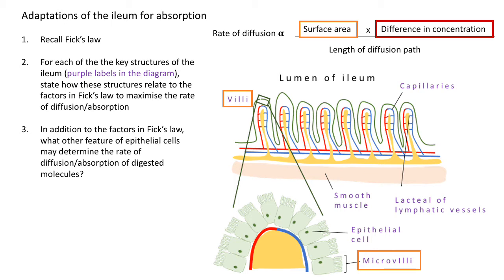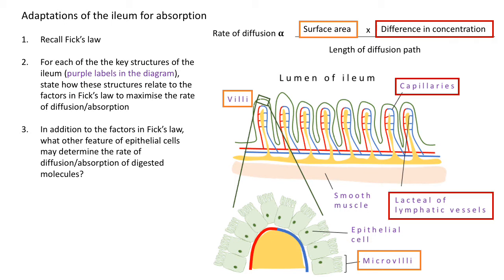Next, difference in concentration — how is that diffusion gradient maintained? There are capillaries: this mass transport system continually moves blood through the ilium, so you're continually creating that difference in concentration between the lumen of the ilium, the cell, and the blood. You should also have identified the lacteal of the lymphatic vessels, which moves away substances — specifically transporting chylomicrons — maintaining that diffusion gradient.